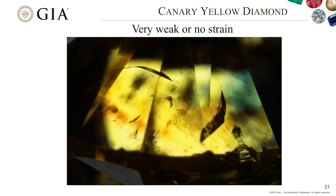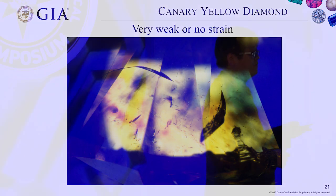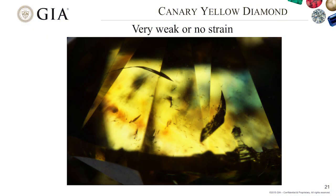The most outstanding feature for this group of diamonds is that they show very weak or no plastic deformation. This image, taken under crossed-polarizer microscopy, shows the very strong yellow body color of the stone, and the gray area reveals plastic deformation that is very weak — a huge difference from type 1b diamonds. This explains many other gemological features we'll discuss.